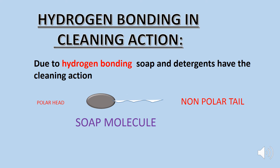Hydrogen bonding plays an important role in our cleaning action. Due to hydrogen bonding, soap and detergents have a cleaning action. The soap molecule has a polar head and a non-polar tail. According to the principle of like dissolves like, the polar head of soap dissolves in water, which is polar, whereas the non-polar tail dissolves in non-polar substances, and in this way cleaning takes place.